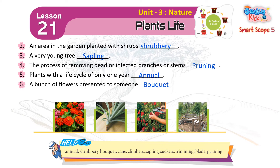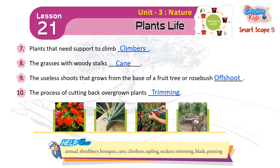6. A bunch of flowers presented to someone — bouquet. 7. Plants that need support to climb — climbers. 8. The grasses with woody stalks — cane. 9. The useless shoots that grow from the base of a fruit tree or rose bush — offshoot. 10. The process of cutting back overgrown plants — trimming.